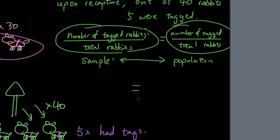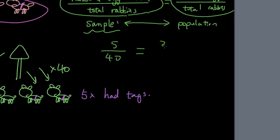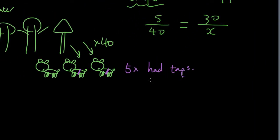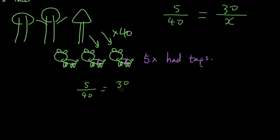So then we put them inside a fraction. Number of tagged rabbits is 5, total rabbits is 40 in the sample. And then number of tagged rabbits in total in the forest is 30 because we tagged 30 rabbits. But we don't know the total rabbits of the whole population. So then we use this equation and we try to solve that. 5 out of 40 equals 30 out of x.